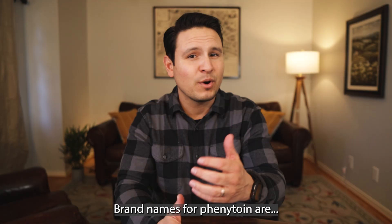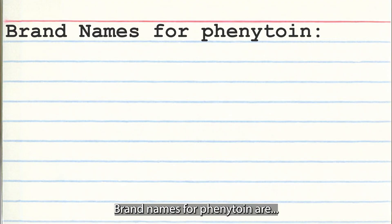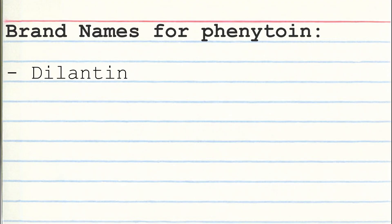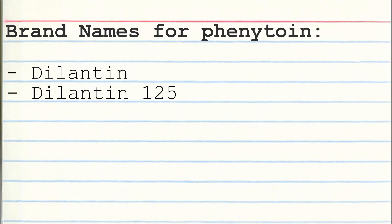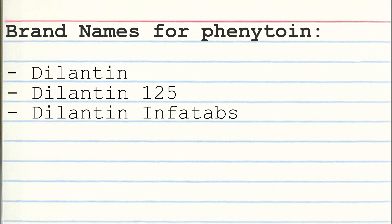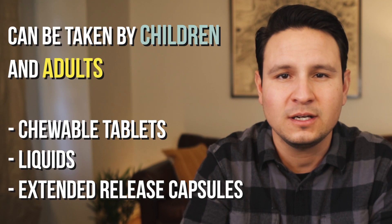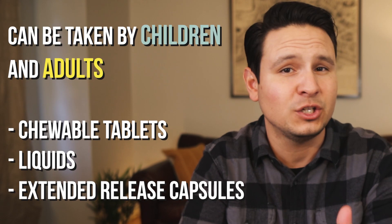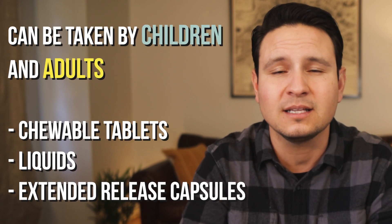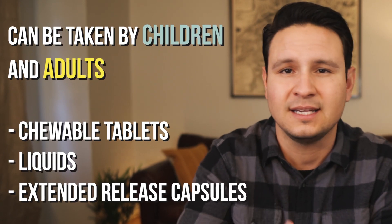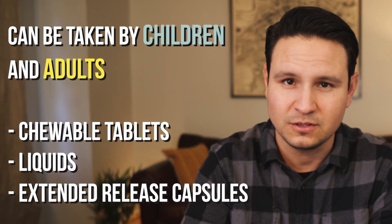Brand names for phenytoin are Dilantin, Dilantin-125, Dilantin-Infatabs, and Phenotech. Phenytoin can be taken by both children and adults via chewable tablets, liquids, and extended release capsules.